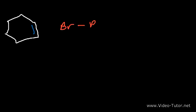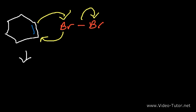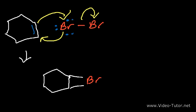How does the alkene react with Br2? First, the double bond attacks one bromine atom, expelling the other bromine atom, while that bromine simultaneously attacks the double bond. What we get is a cyclic brominium intermediate. Initially bromine has three lone pairs, but it loses one to form a bond with the double bond, giving it a positive charge.